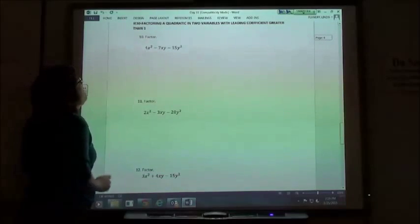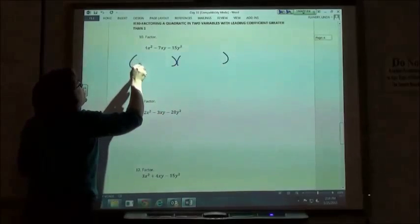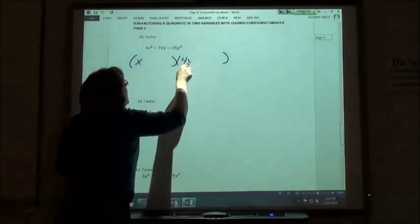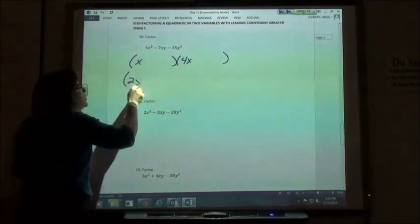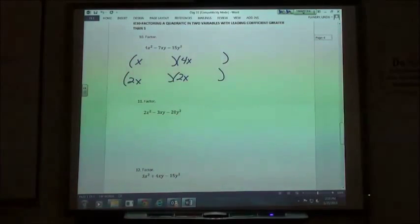So here I have a 4x squared. I've got to keep in mind that 4x squared could be x times 4x. It might also be 2x times 2x. I don't know which one it is. I just keep going.